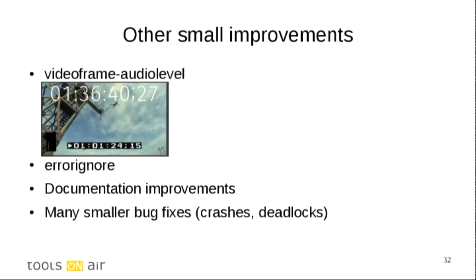And other small improvements that we added. This new little element called video frame audio level. It's essentially showing how loud the audio is between two subsequent video frames with frame accuracy. These bars that you can see at the bottom left of the picture - it's not very well visible - but it's these audio bars that go up and down showing how loud it is, but with accurate synchronization with video frames. We also did another small element called error ignore. If there is an error downstream, just ignore it and say everything is doing fine. It's useful for debugging. Many documentation improvements, many crashes, deadlocks, other bugs that we were encountering - we helped them be fixed upstream.